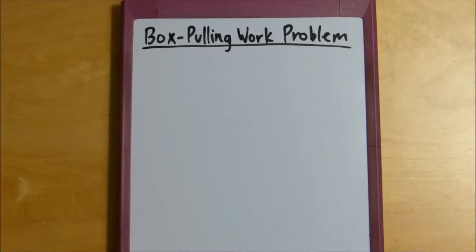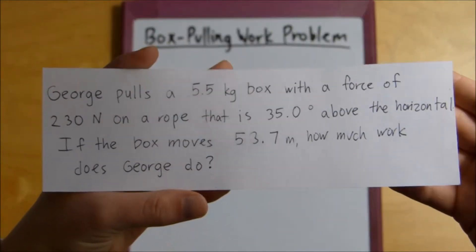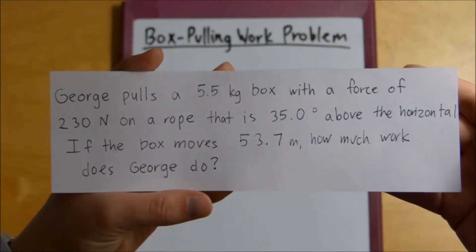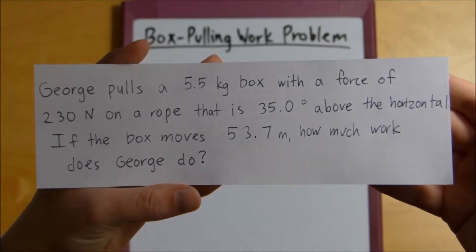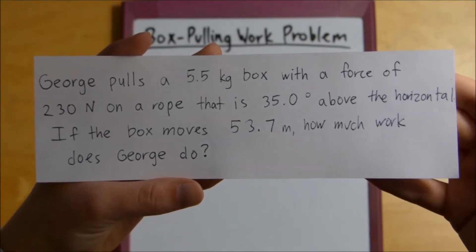All right, so now we're going to do a box pulling work problem. So here's the problem. George pulls a 5.5 kilogram box with a force of 230 newtons on a rope that is 35 degrees above the horizontal. If the box moves 53.7 meters, how much work does George do?